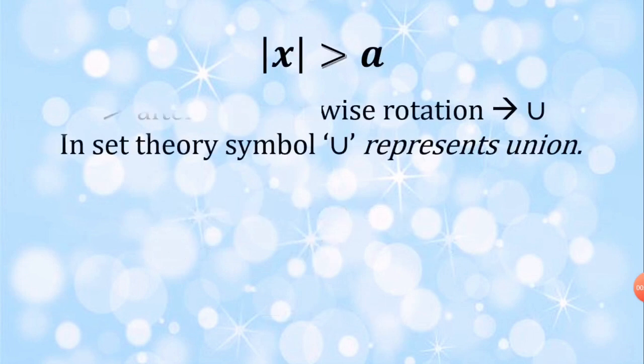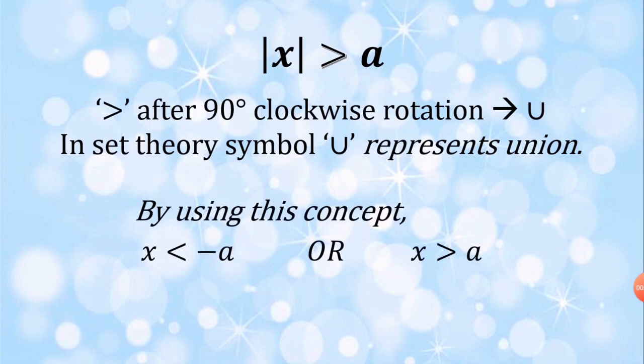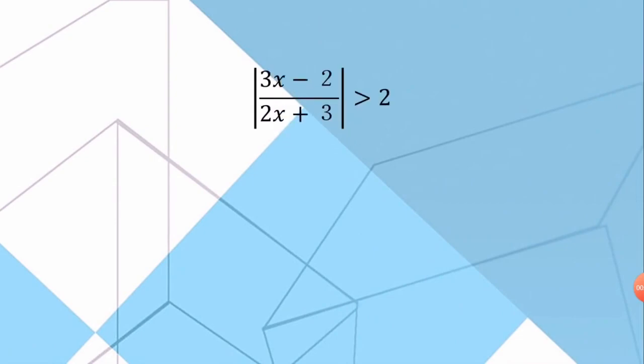Now, if the modulus of x is greater than a, the greater symbol should be turned 90 degrees clockwise. This rotation gives us a symbol which looks alike the letter u. In set theory, this symbol represents union. As you guys know, when the union symbol comes in, we need to use a term which is called OR. Let us move on to our next sample solution.